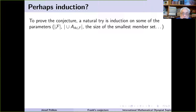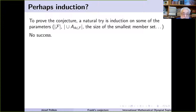A third candidate for a suitable parameter is the size of the smallest member set. Maybe it's more suitable for induction. Note that the size of the largest member set is not a suitable parameter because it will always be the cardinality of the union, if you disregard elements not belonging to any set. Now, bad news: many people tried many types of induction and none of them worked.